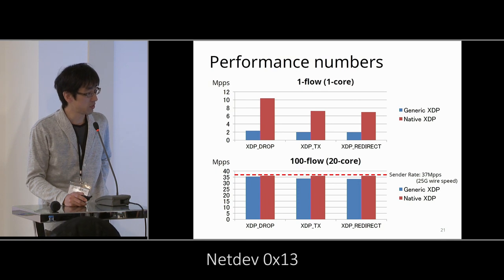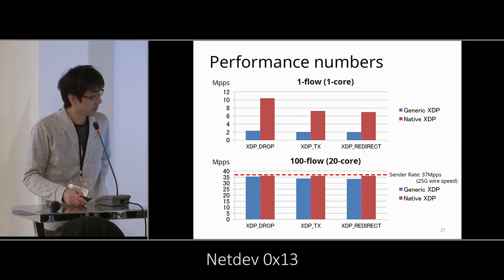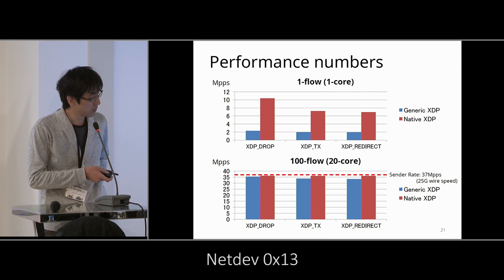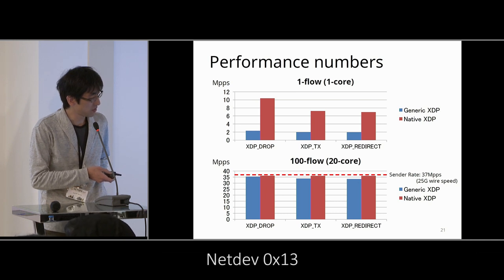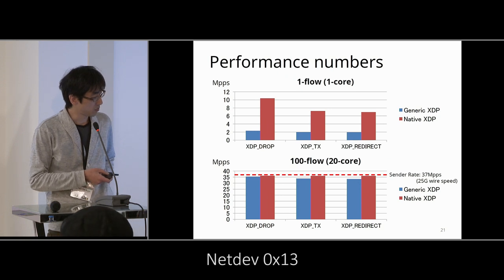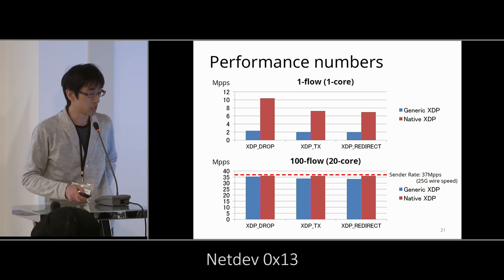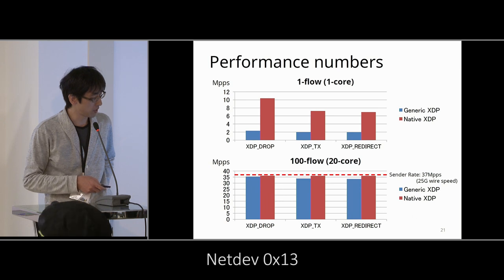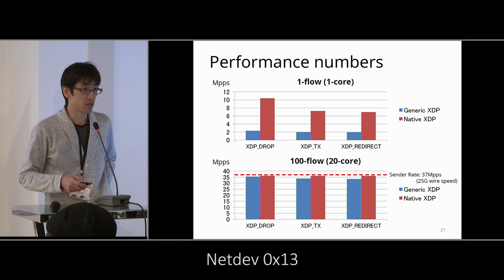The results show that in a one-flow test, native XDP drop achieves 10 mega PPS with one core, and 7 mega PPS in XDP-TX and redirect tests, while generic XDP achieves only 2 mega PPS in each test. In a 100-flow test using 20 cores, native XDP achieves almost 25 gigabit wire speed.